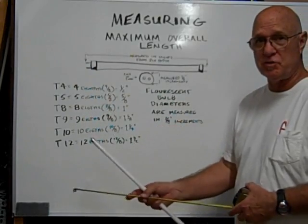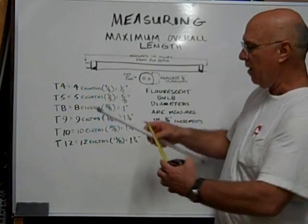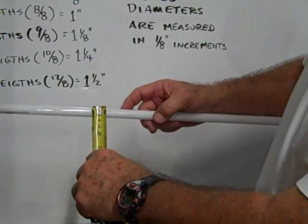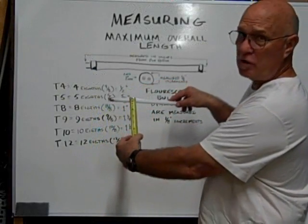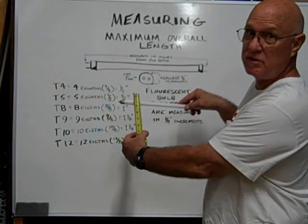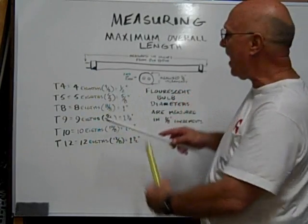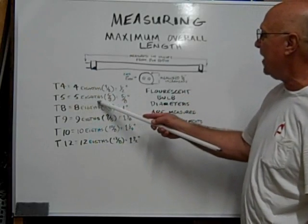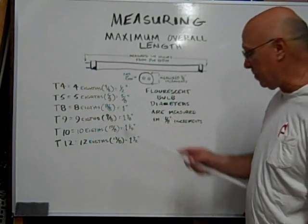If I was going to measure this bulb, I would lay it across the bulb and measure in eighths of an inch increments. So if this is a T5, it's 5 eighths or 5 eighths of an inch in diameter.